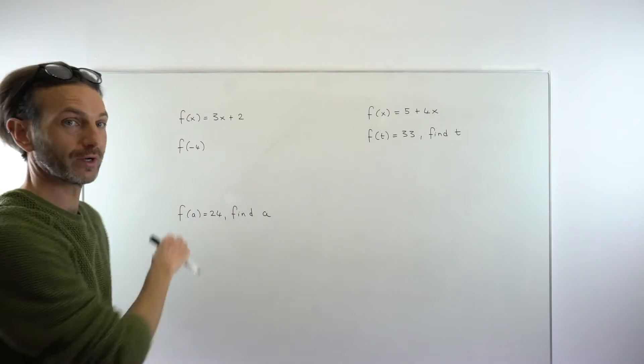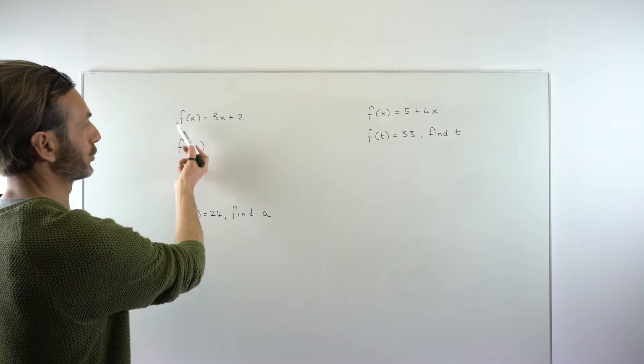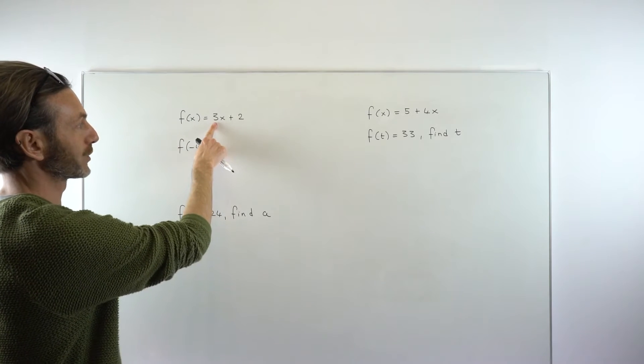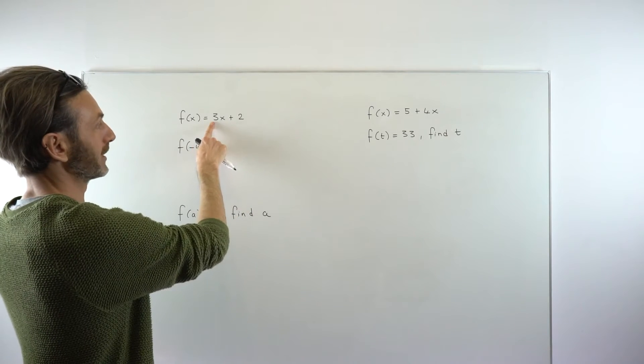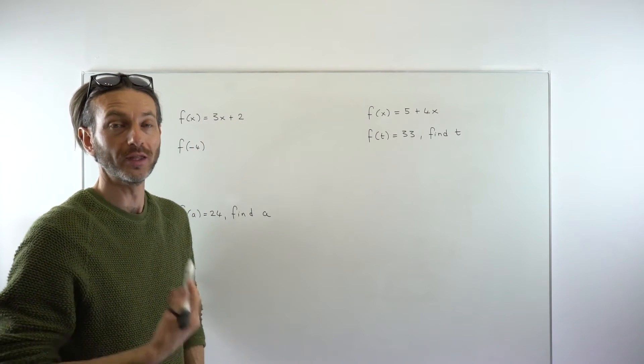Let's start with an easier example. So remember, a function is just like a formula. So this function notation is really just a way of saying this formula. And this formula is just telling you to take your x value, whatever value you want it to be, multiply it by 3 and add on 2. That is the formula, that is the function. That's what it's going to do to the x value.